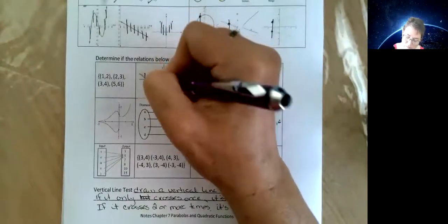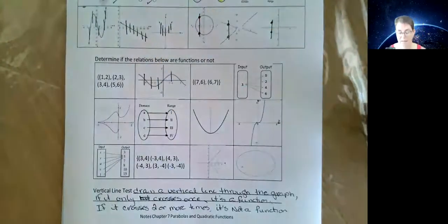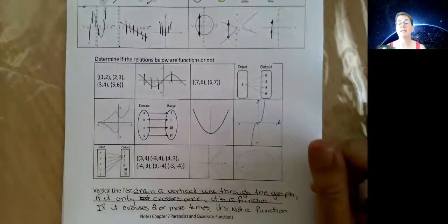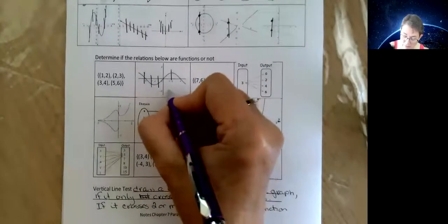All right, so I'm going to do my vertical line test on all these. It doesn't matter how many of those I do. This is going to be a function. I'm never going to hit it twice.